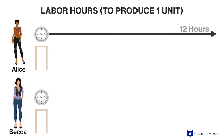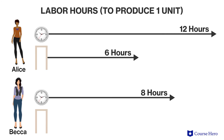Suppose it takes Alice 12 hours to build a clock and 6 hours to build a door frame, but it only takes Becca 8 hours to build a clock and 2 hours to build a door frame. Given a fixed amount of time to produce items, we would say that Becca has the absolute advantage in production of both clocks and door frames, because she can produce each in less time, which means she could produce the most of either item if she dedicated her time to it.